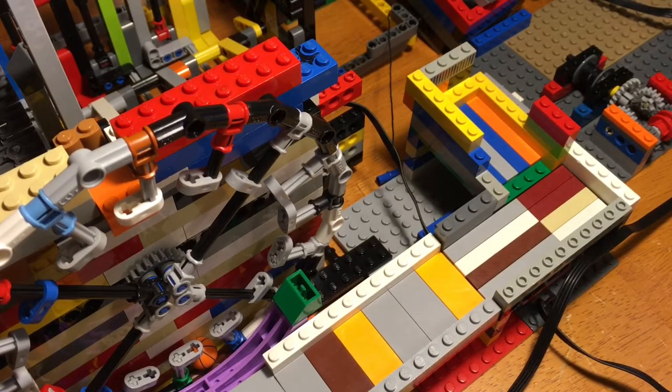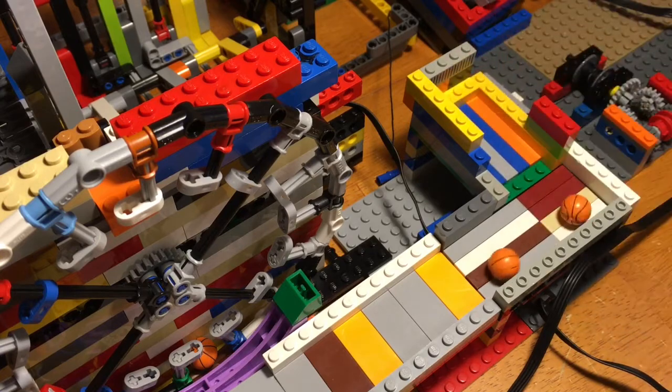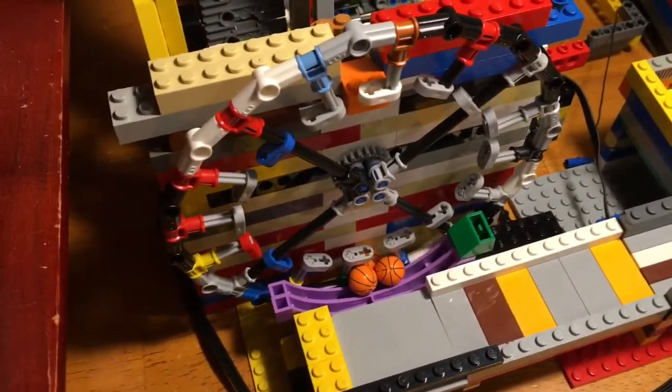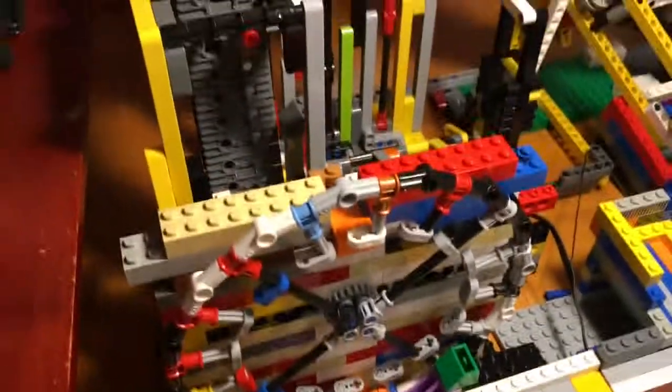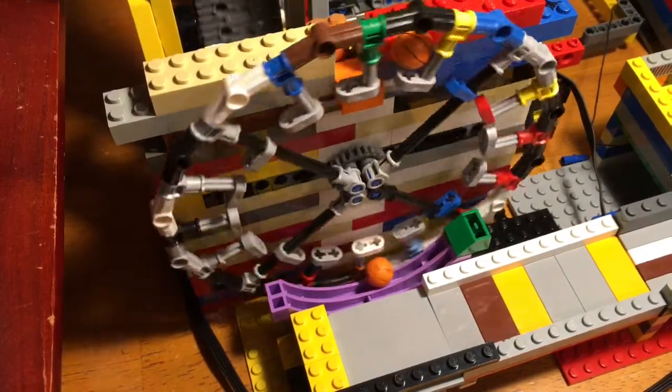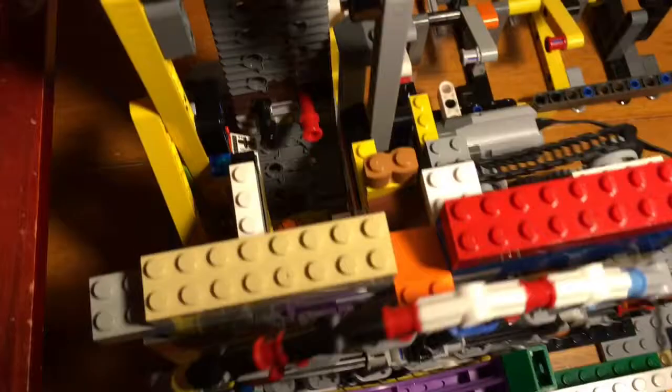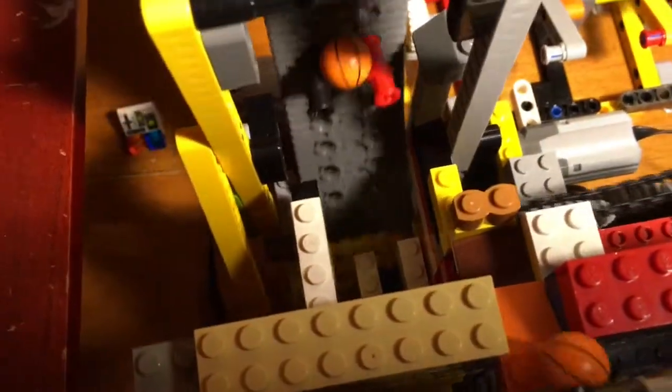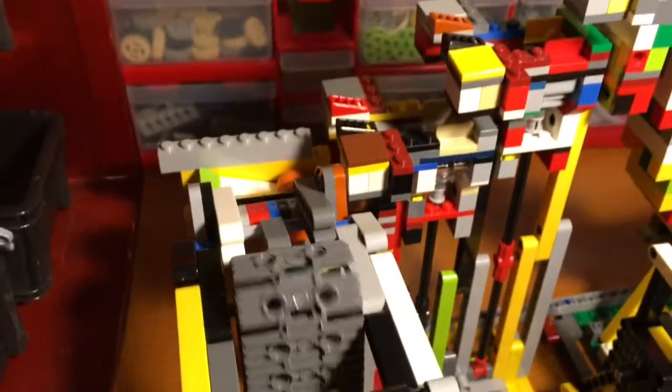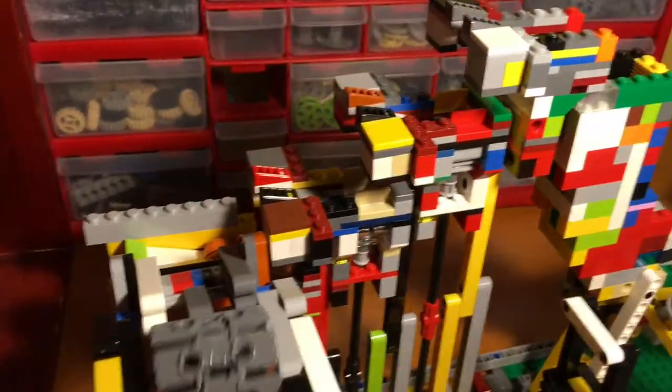So basically after that the balls fell into this module here. And then this is the one run by the speed regulator. So you turn it on one click to the left, and it simply picks up the balls and then drops them into the conveyor belt. And then it drops them into the next module.